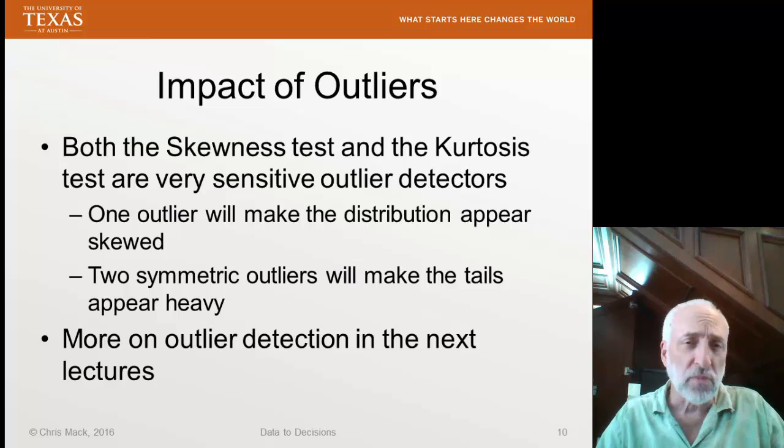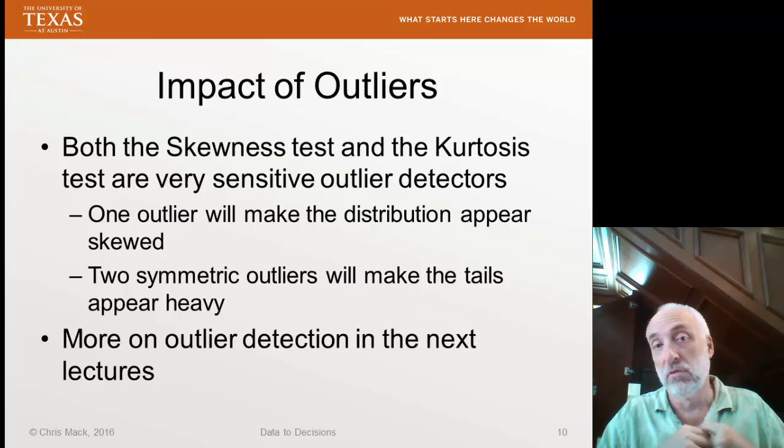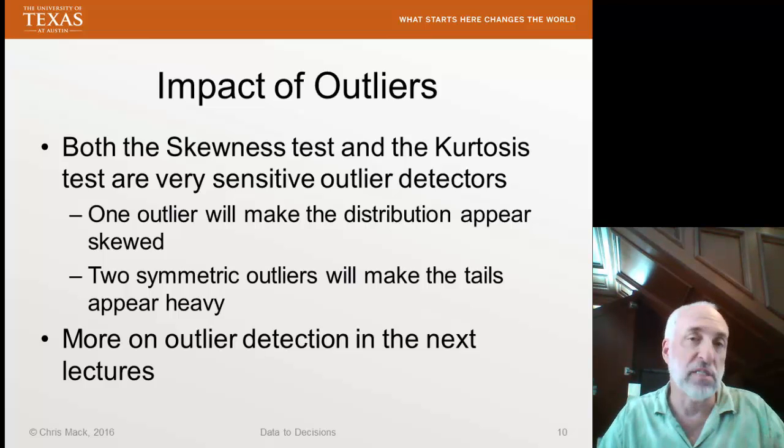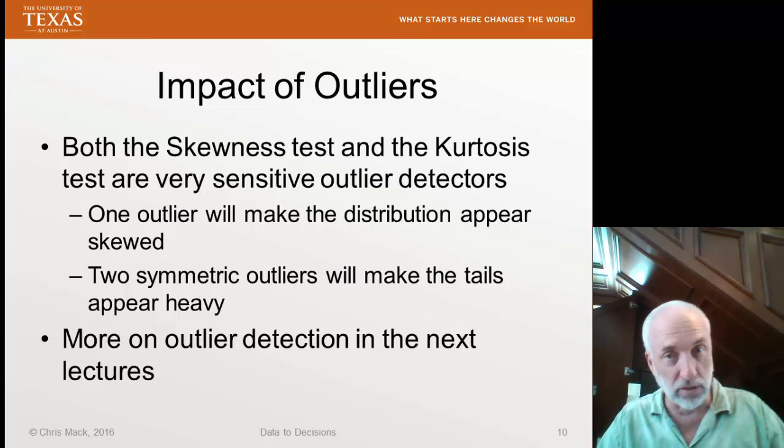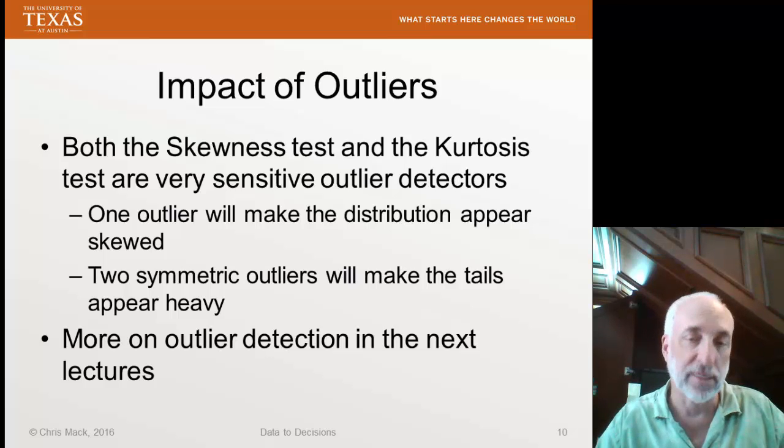So often, not always, but often we'll fail a skewness test or a kurtosis test because of the presence of outliers. Therefore, once you've failed one of these tests, you need to go and look at why you might have failed the test. And we're going to talk about outlier detection, what to do about outliers in subsequent lectures.